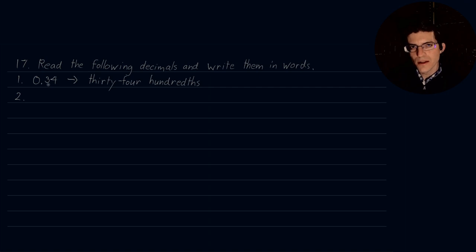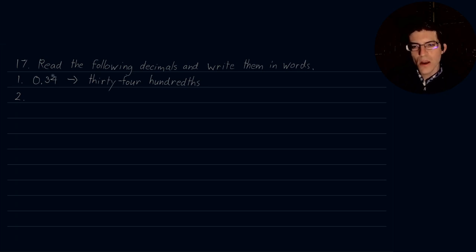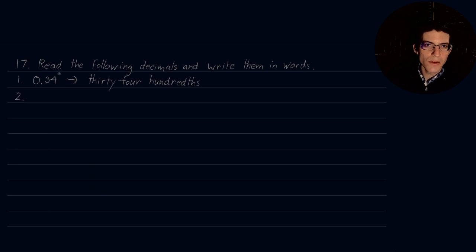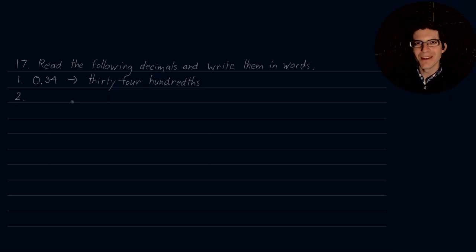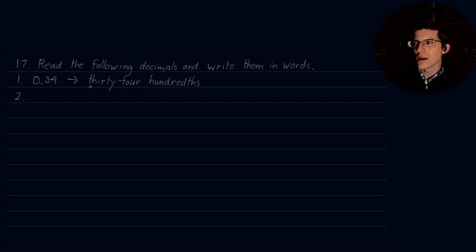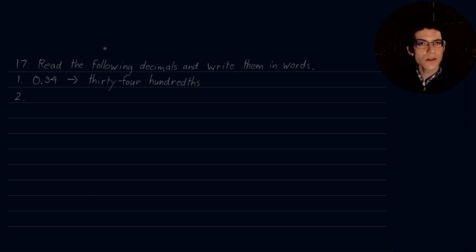Remember that in decimals, as you move to the right of the decimal place, you start off with tenths, then hundredths, thousandths, ten-thousandths, hundred-thousandths, and so on. Every three positions is considered a period. So tenths, hundredths, thousandths make up your first period — that would be your thousandths period.